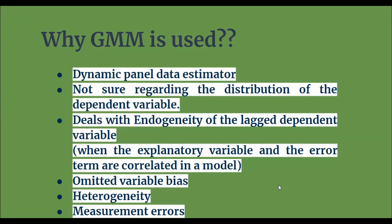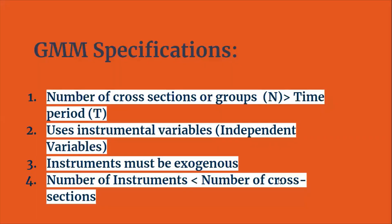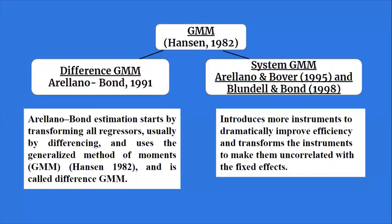What are the GMM specifications? The first is that the number of cross-sections or groups — N — should be greater than the time period T. The second is that GMM uses instrumental variables, i.e., the independent variables, and the instruments must be exogenous. Lastly, the number of instruments should be less than the number of cross-sections — that is, the number of independent variables in your model should be less than the number of cross-sections in order to run the GMM model.